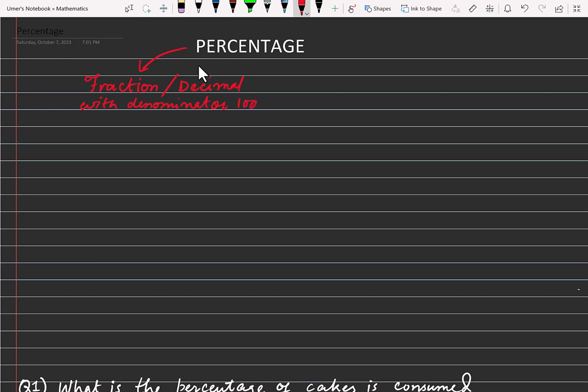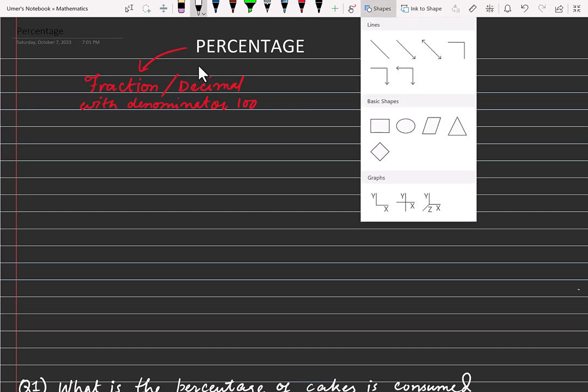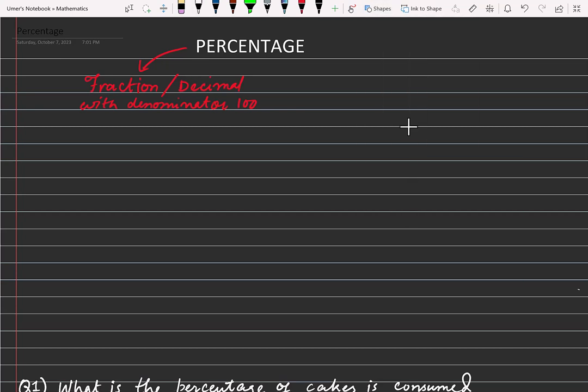When the denominator is made 100, it is called percentage. Now what does this mean? Let me explain with an example. Suppose we have a circle, and if I divide this circle into four equal parts...